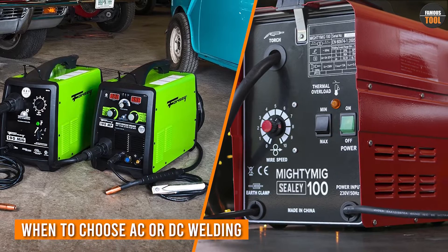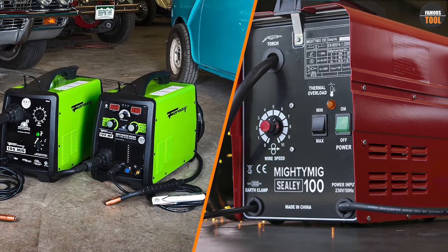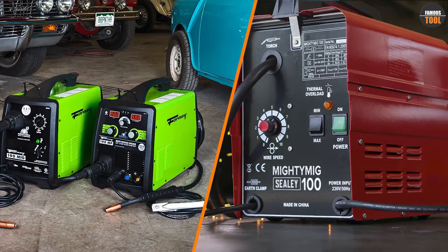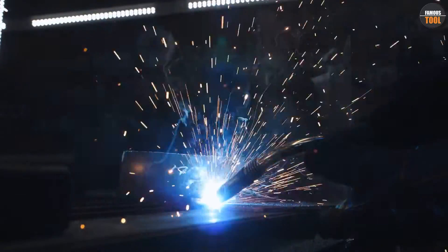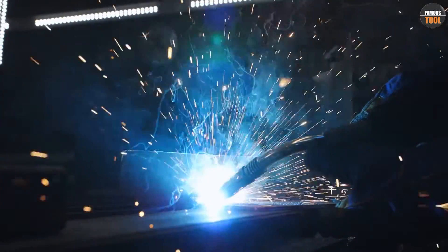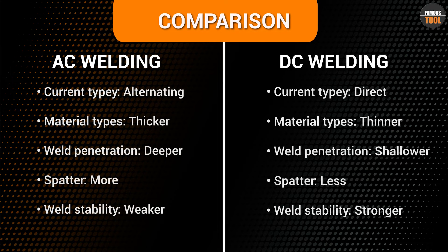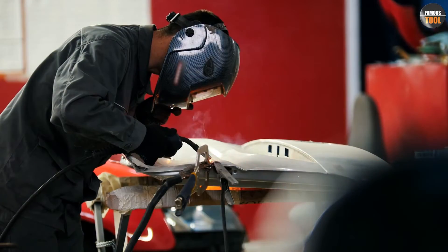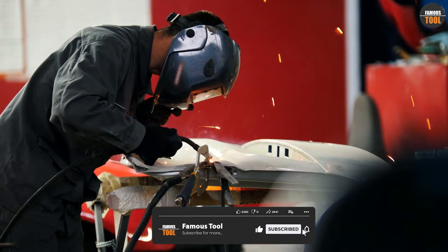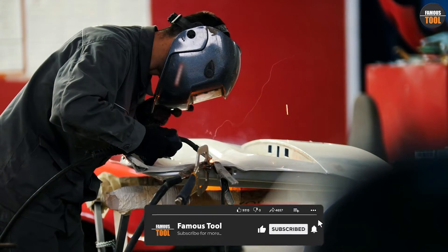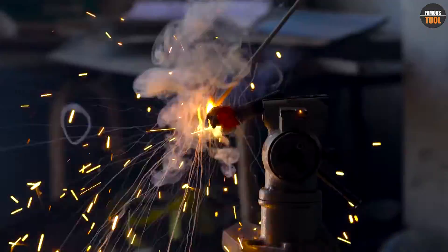When to choose AC or DC welding? The answer depends on the type of material you are welding and the thickness of the material. If you are welding thicker materials such as aluminum, copper, or stainless steel, AC welding is the better choice due to its deeper penetration. However, if you are welding thinner materials such as mild steel or cast iron, DC welding is the better choice due to its smoother weld and greater control. Overall, both AC and DC welding have their advantages and disadvantages, and the type of welding you choose depends on the type of material and its thickness.